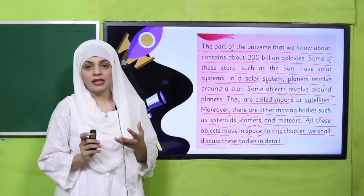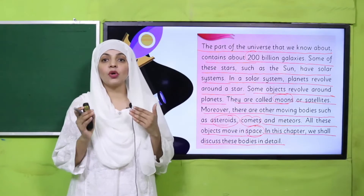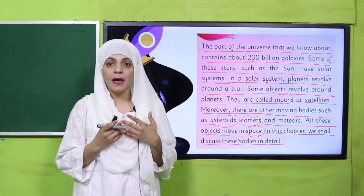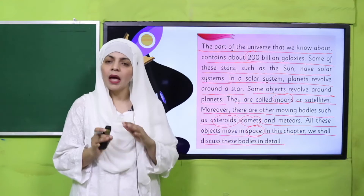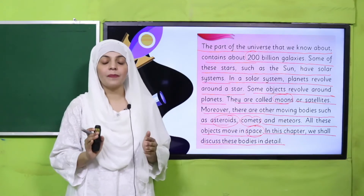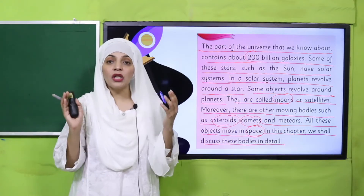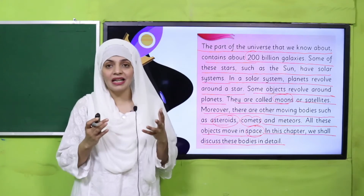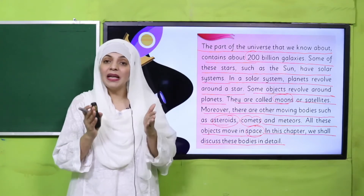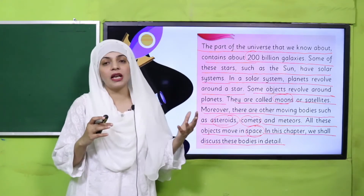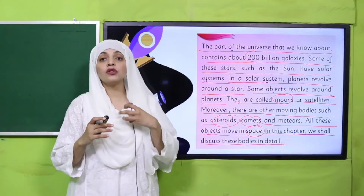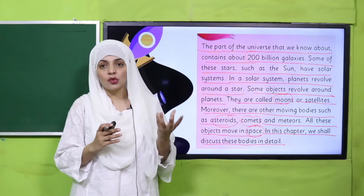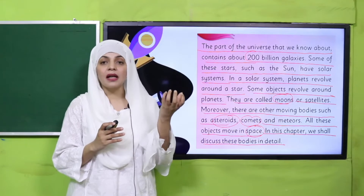Jo hamari universe hai, jise aap jaante hain, hamara solar system ek galaxy mein hai, aur hamaari galaxy ka naam hai Milky Way. Pehle aap in cheezon ke baare mein parh chuke hain, lekin jo hamari universe hai — jo poori kainat hai — uske andar there are more than 200 billion galaxies. Milky Way jaisi bohut saari aur galaxies hain, un mein bahut saare systems hain, jaise humara ek chhota sa solar system hai jiske center mein Sun hai.